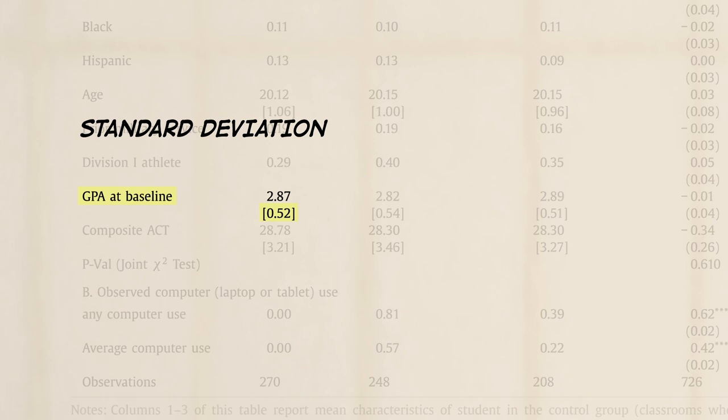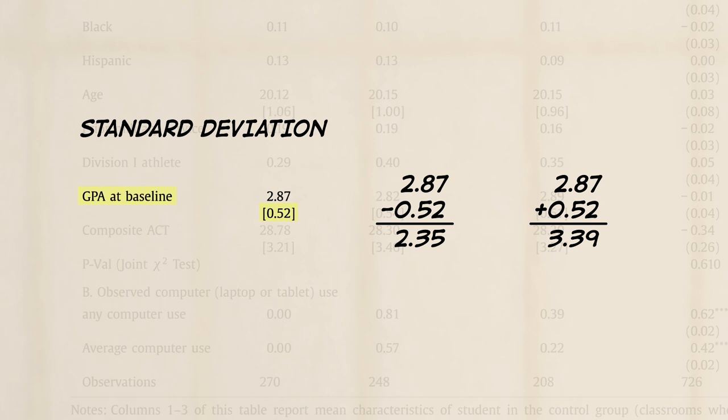For example, a standard deviation of 0.52 tells us that most of the control group's GPAs fall between 2.35, which is 0.52 below the mean GPA of 2.87, and 3.39, which is 0.52 above 2.87.